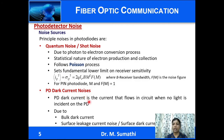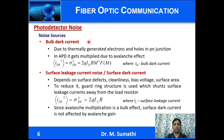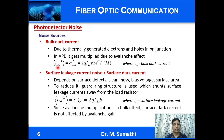Dark current is a current that flows in the circuit when no light is incident on the photodiode. It is due to bulk dark current and surface leakage current. In addition to charge carriers generated by photons, thermally generated electrons and holes exist in the p-n junction, resulting in dark current. In an APD, this bulk dark current gets multiplied due to the avalanche effect, and the expression for this current is given.